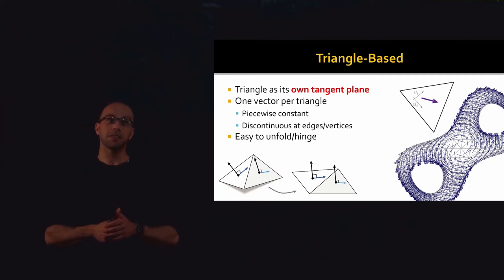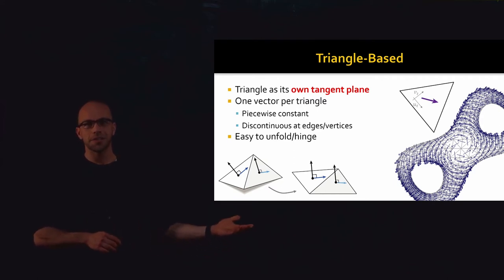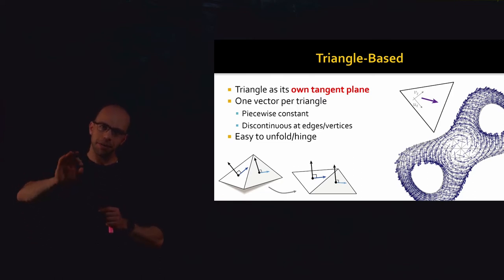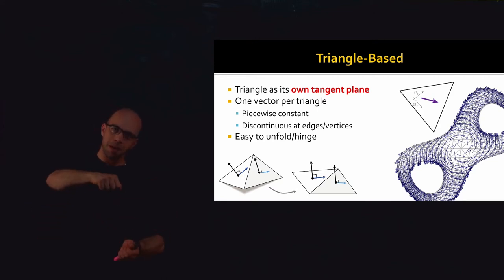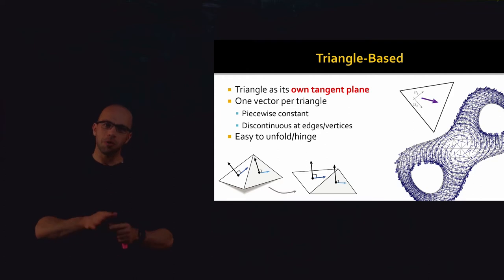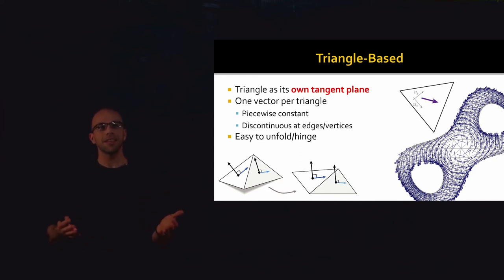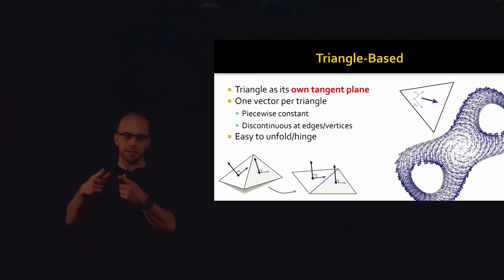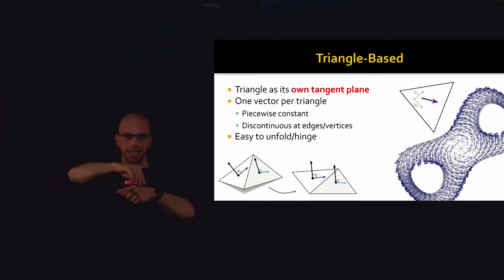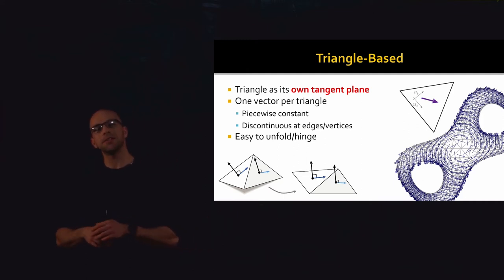That said, triangle-based vector fields do have one really nice geometric property: it's very easy to define a parallel transport operator. Parallel transport is the idea of taking a vector at one point and dragging it along a surface to another point while minimizing the amount of twist in the tangent plane. A really obvious discretization is to take two triangles, think of the shared edge like a hinge, unhinge them so they share the same plane, and then just translate a vector from one triangle into the other. This gives you a way to parallel transport a vector from one triangle to the next.